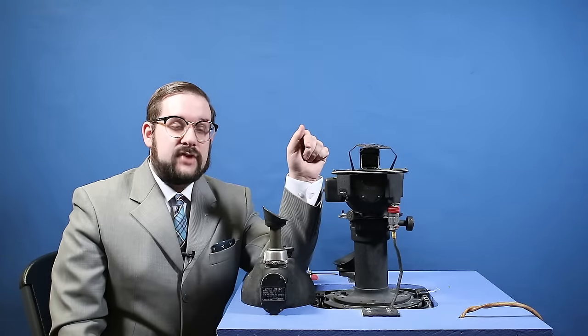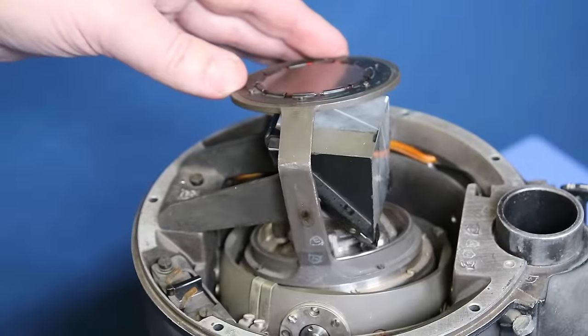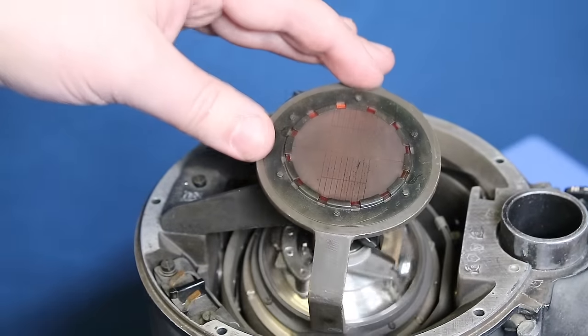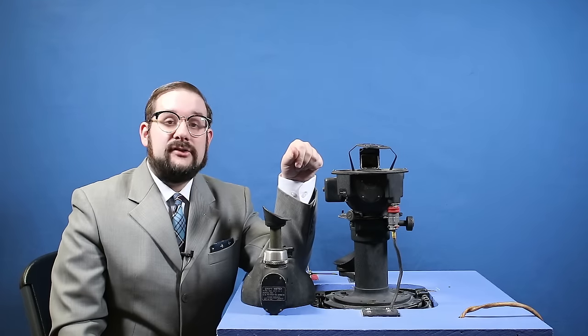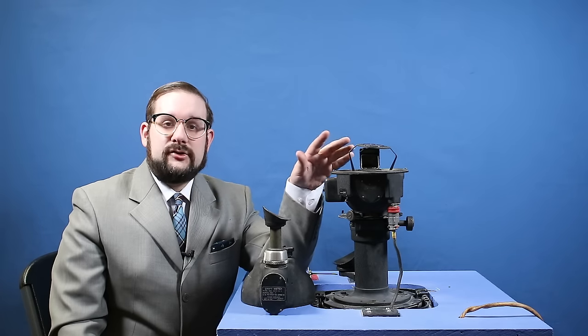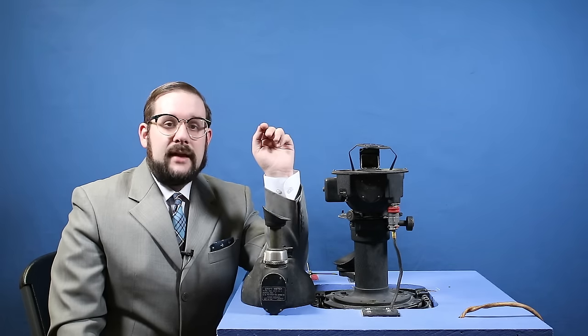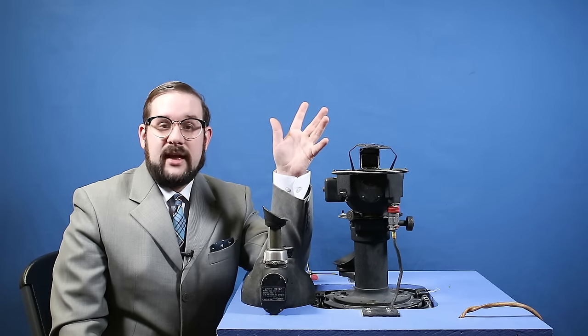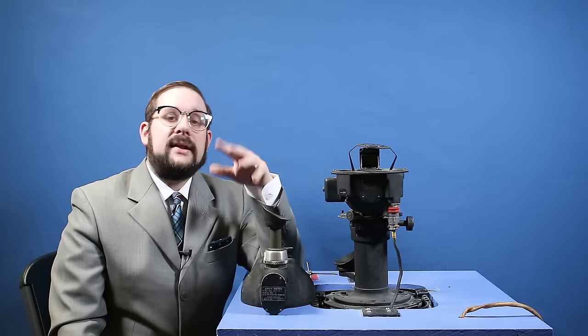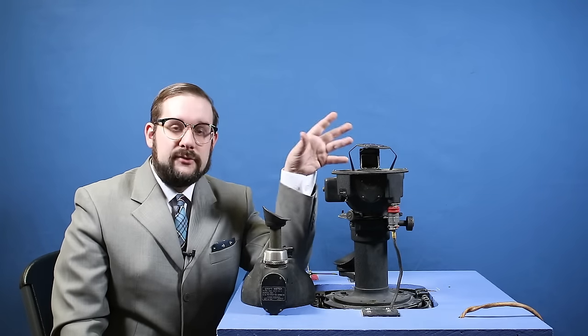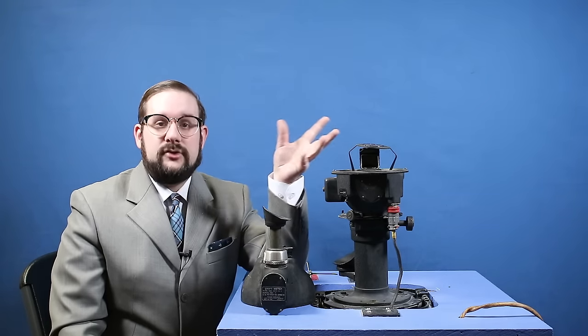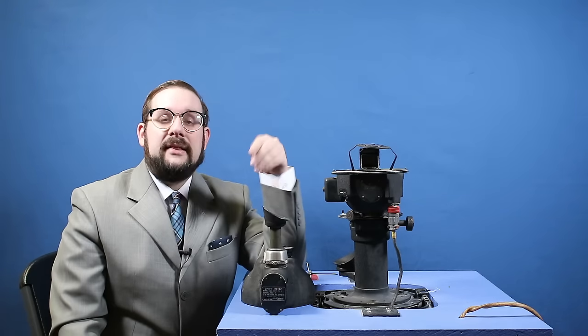One last thing to mention regarding this gyroscope is this ball bearing that runs around a circular track at the top. This is what's known as an erection mechanism which is designed to keep the gyroscope pointed vertically. Gyroscopes tend to stay in the orientation that you leave them. That's kind of the point.